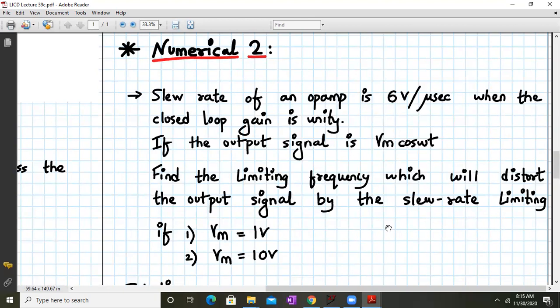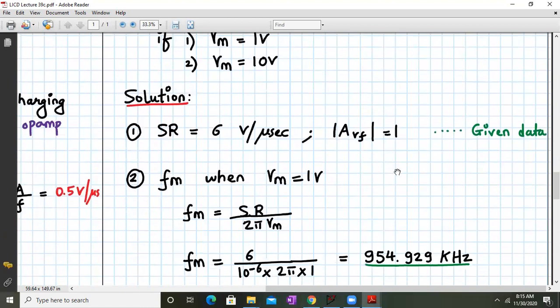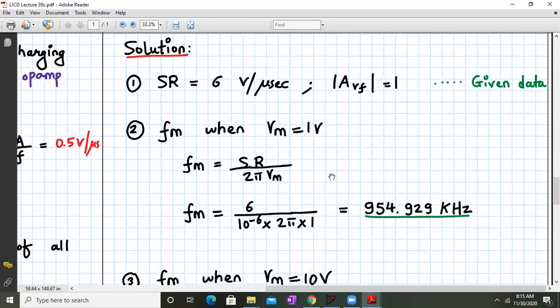And we have to find the limiting frequency which will distort the output signal by slew rate limiting. So we have to find the limiting frequency which will distort the output signal. Okay. Now, this has to be done for two cases. For first case, we have Vm equal to 1 volt. And for the second scenario, we have Vm equal to 10 volt. Okay. So let us start. The slew rate is given, that is 6 volts per microsecond. And we have to calculate the frequency. So frequency Fm when Vm equals 1 is given by Fm equals slew rate divided by 2 pi Vm. So slew rate Fm will be 6 divided by 10 raised to minus 6 into 2 pi into 1. So if you work out in a calculator, this number will come close to 954.929 kilohertz.